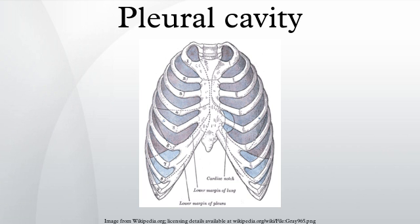The mediastinal and central portions of the diaphragmatic pleura are innervated by the phrenic nerves. The visceral pleura covering the lung itself receives its innervation from the autonomic nervous system. During development, the intraembryonic coelom is one continuous space that partitions to form the pericardial, pleural and peritoneal cavities.